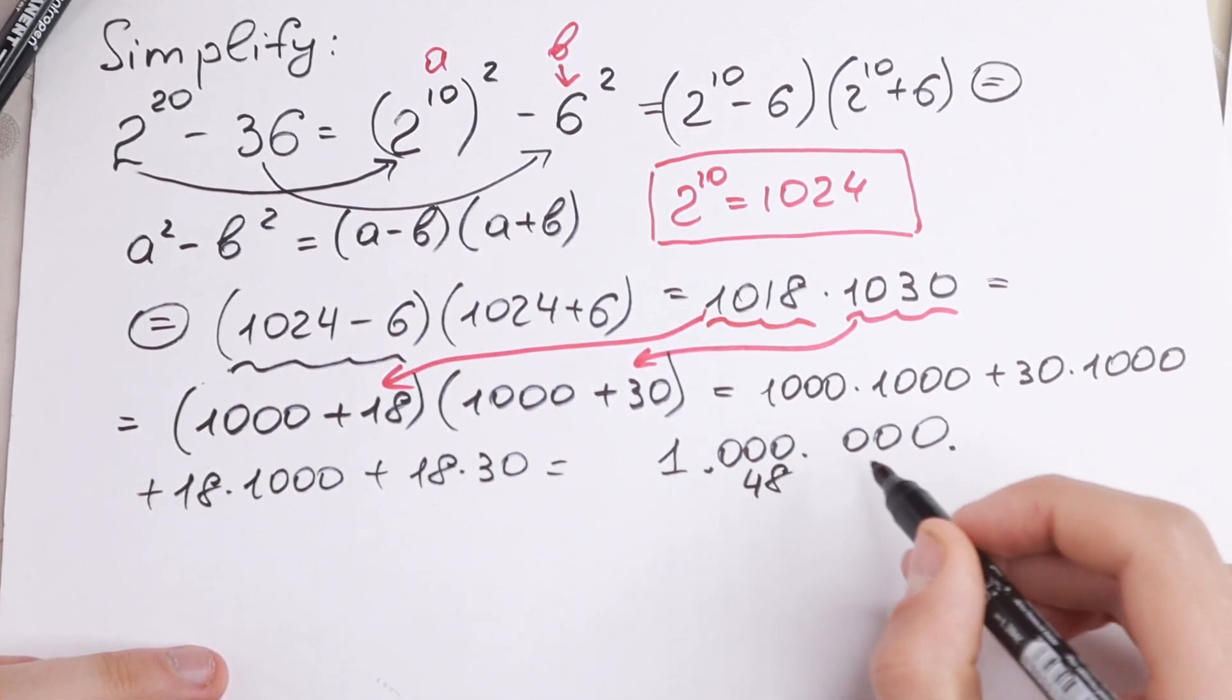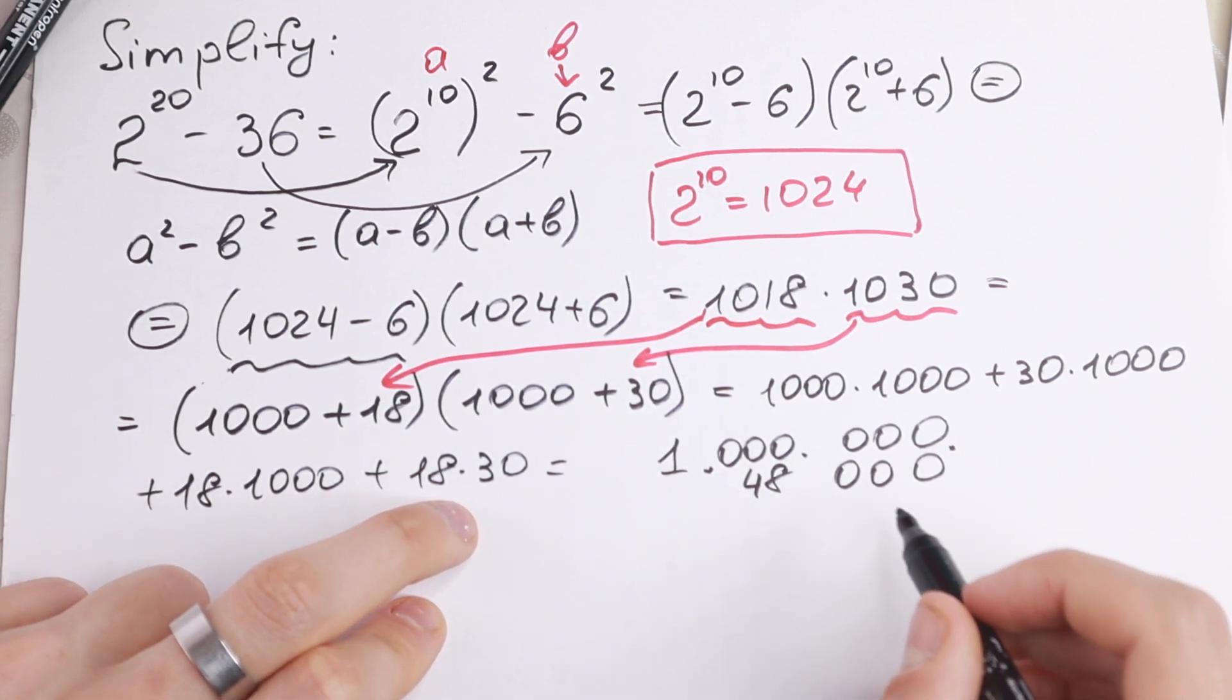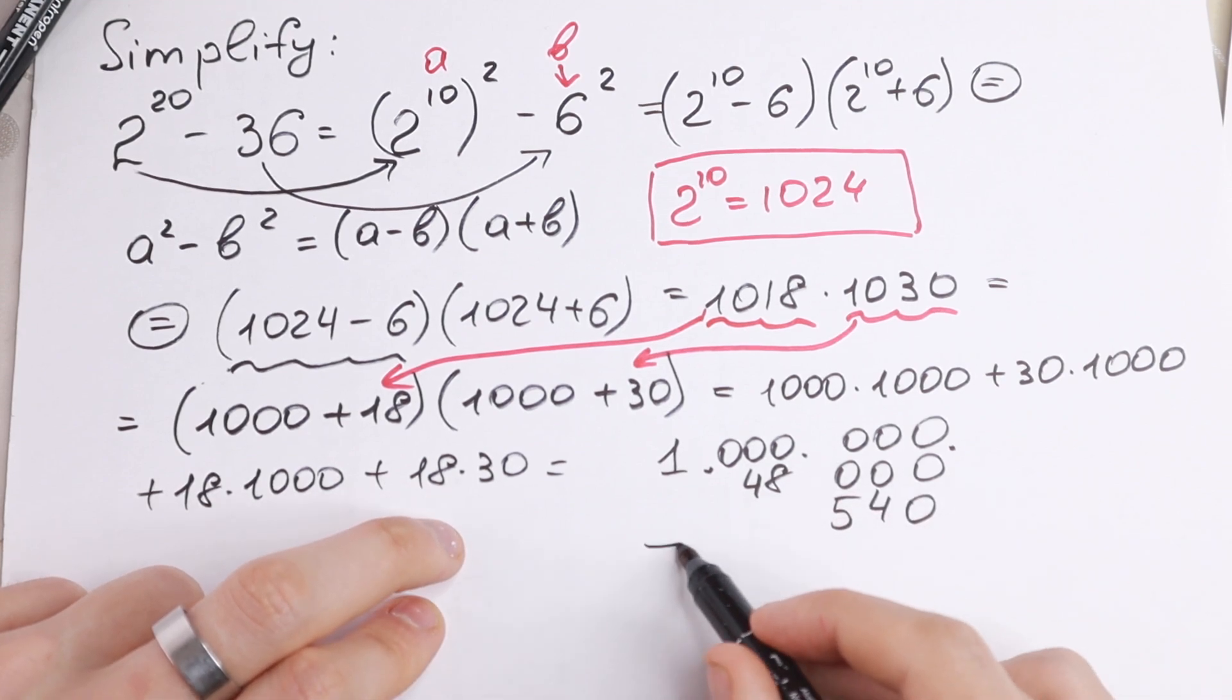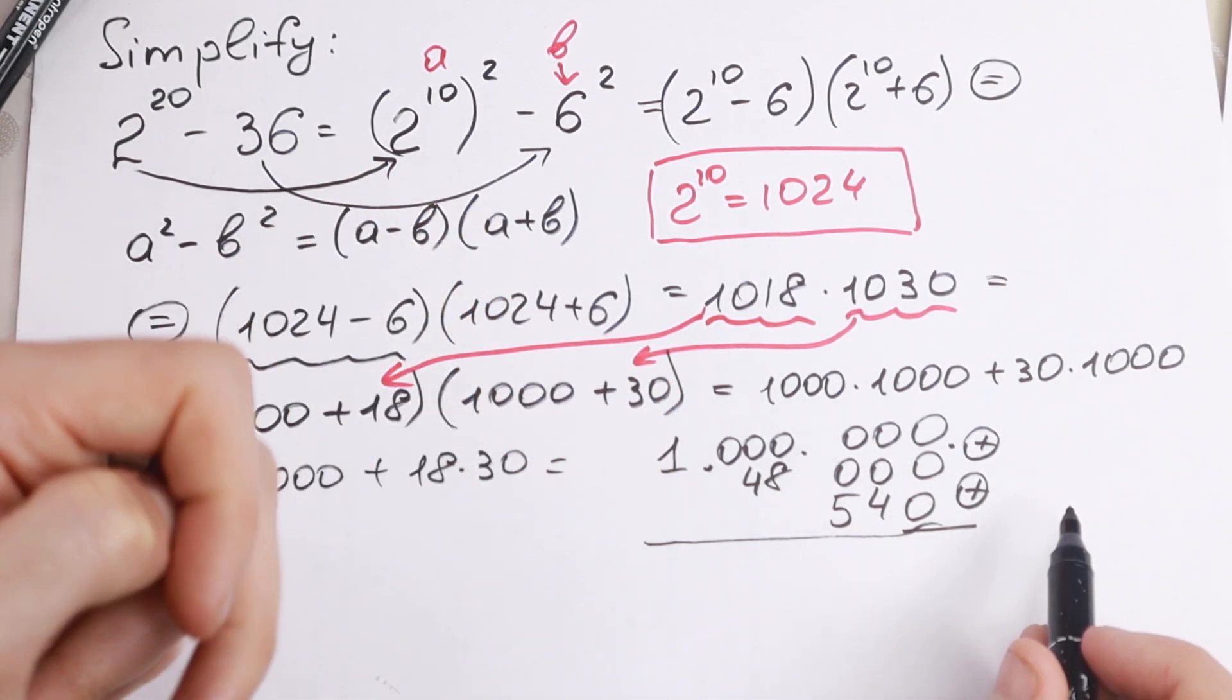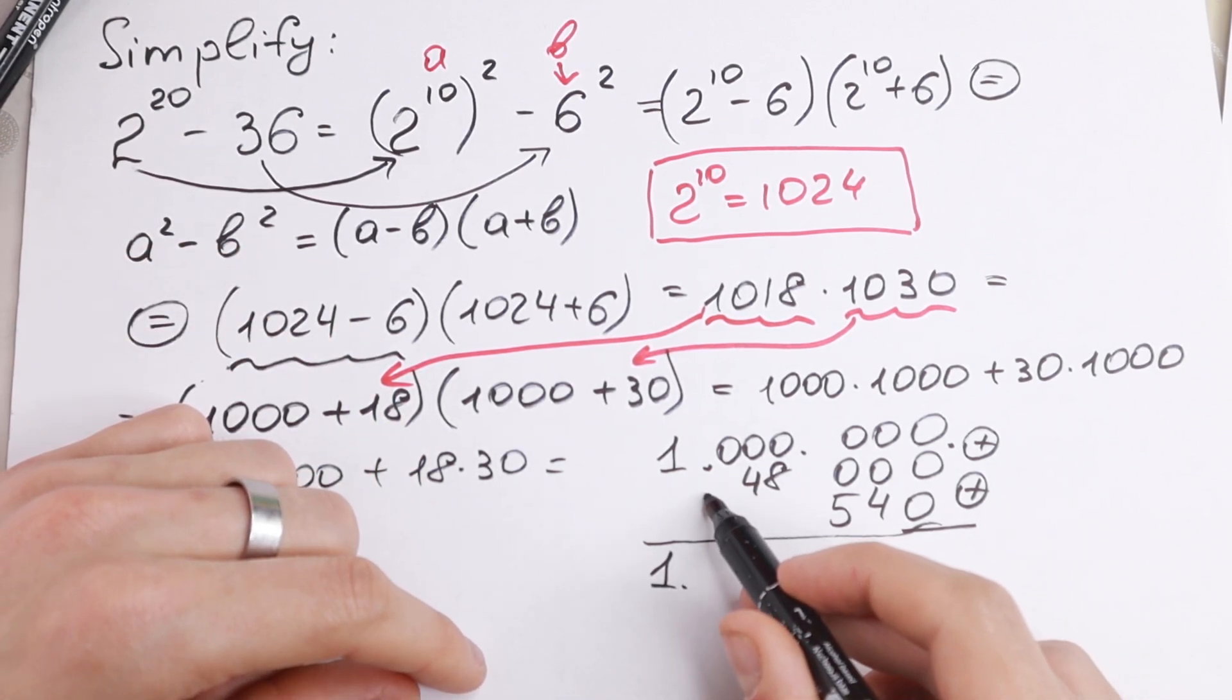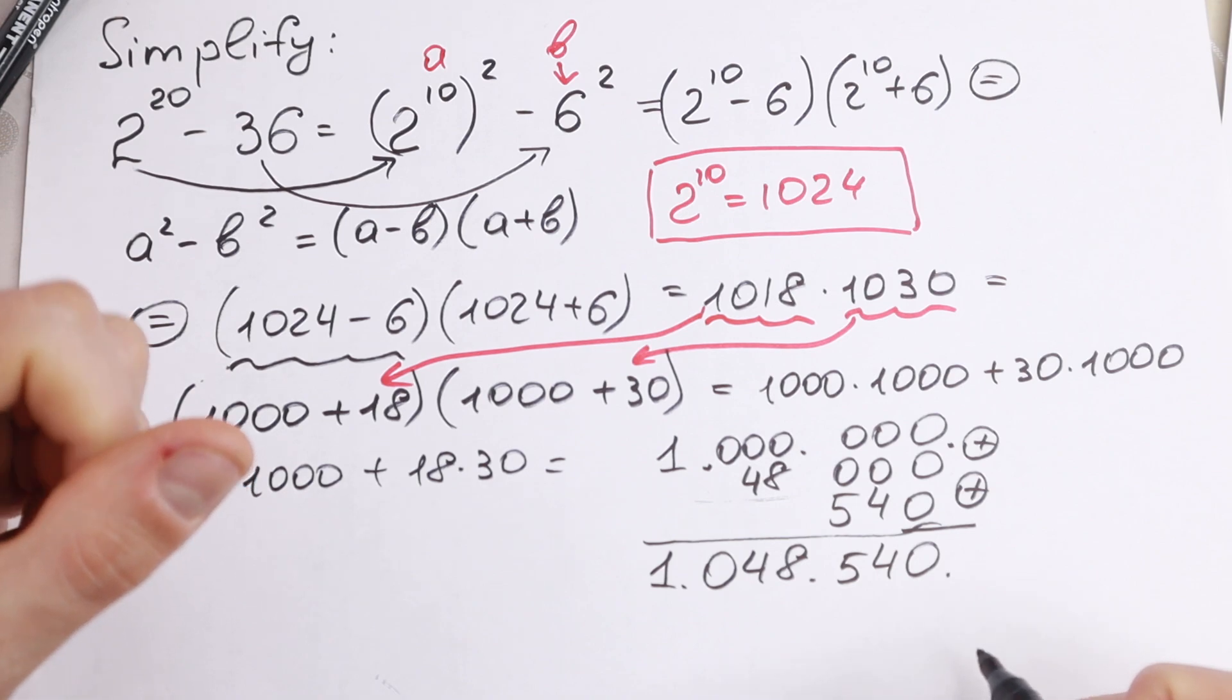So 48 and 0, 0, 0. And 18 times 30, 18 times 3 will be 54. So plus 5, 4, 0. And if you add all of these values, addition, addition. I just add all rows, add it at once. We will have one million. Right here we'll have 48,000. And 5, 4, 0. Which is our answer.